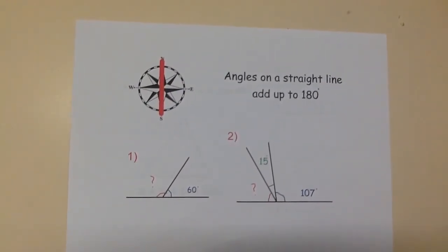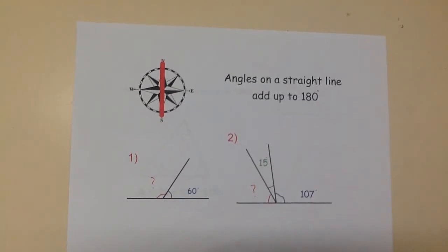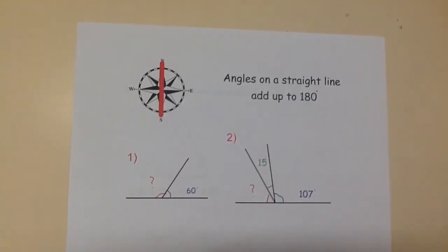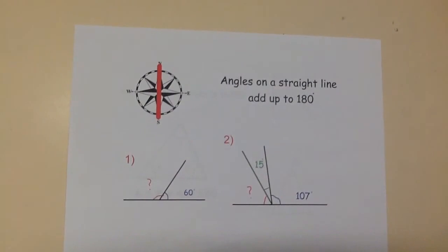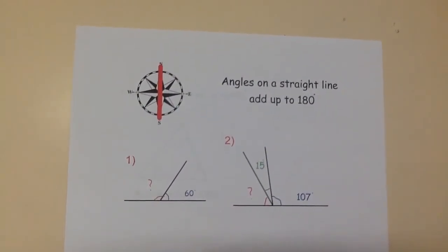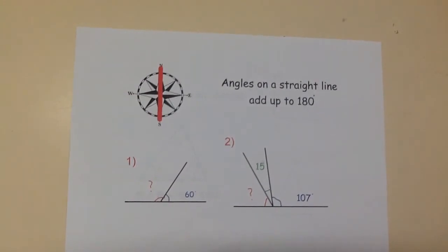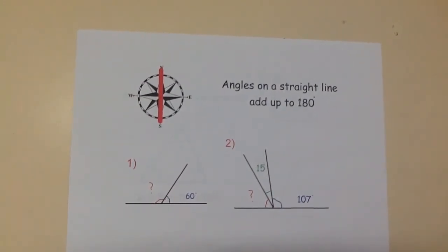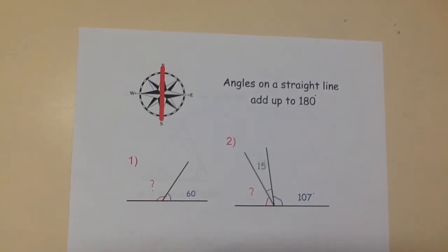So for question 1, we need to subtract 60 from 180, which means the remaining angle is 120 degrees. For question 2, we need to add together 15 and 107, which makes 122 degrees. We then subtract this from 180, which means the remaining angle is 58 degrees.